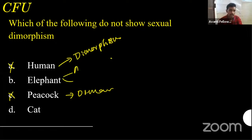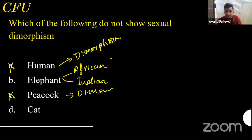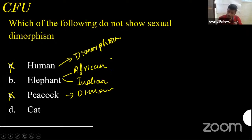We have two types: African elephant and Indian elephant. In African elephants, both male and female have tusks — so you cannot differentiate. Indian elephant: only male has tusks — so partial sexual dimorphism. For cat, you can't differentiate anywhere, so cat is the correct answer — it does NOT show sexual dimorphism.